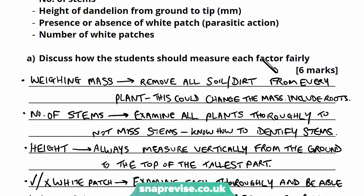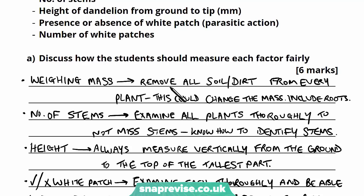The first factor is the mass of the dandelion — how can they measure mass fairly for each of the 20 dandelions? When pulling dandelions up some will have soil and dirt or bits of grass attached. So you must always remove all soil and dirt from every single plant taken up, because this could alter the measured mass. That's one mark.